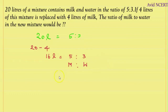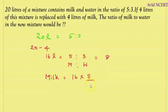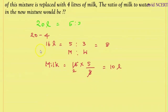To find the quantity of milk: the total parts are 5 plus 3 equals 8. The quantity of milk equals the total mixture of 16 liters times the part of milk (5) divided by the total parts (8). So 16 divided by 8 is 2, and 2 times 5 is 10. Therefore, there are 10 liters of milk in the remaining mixture.